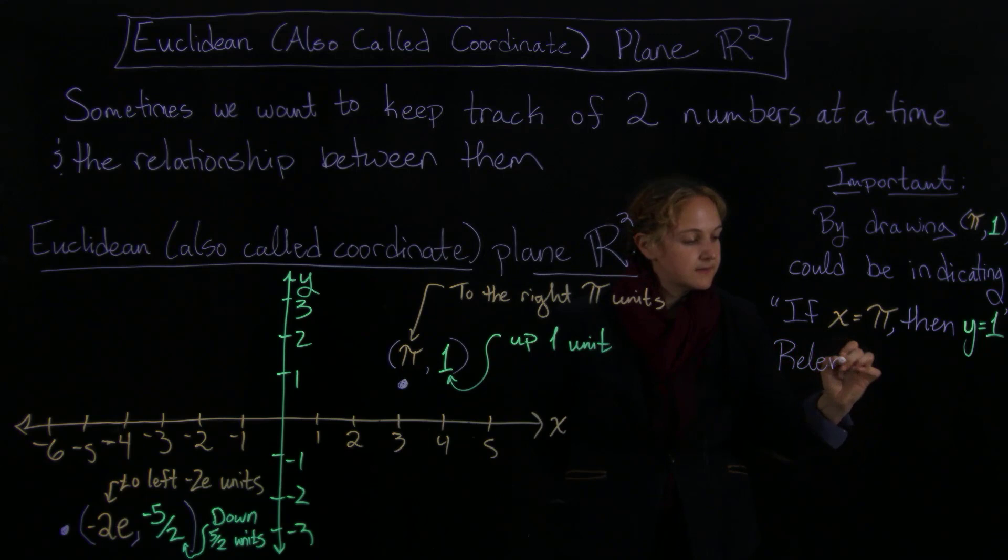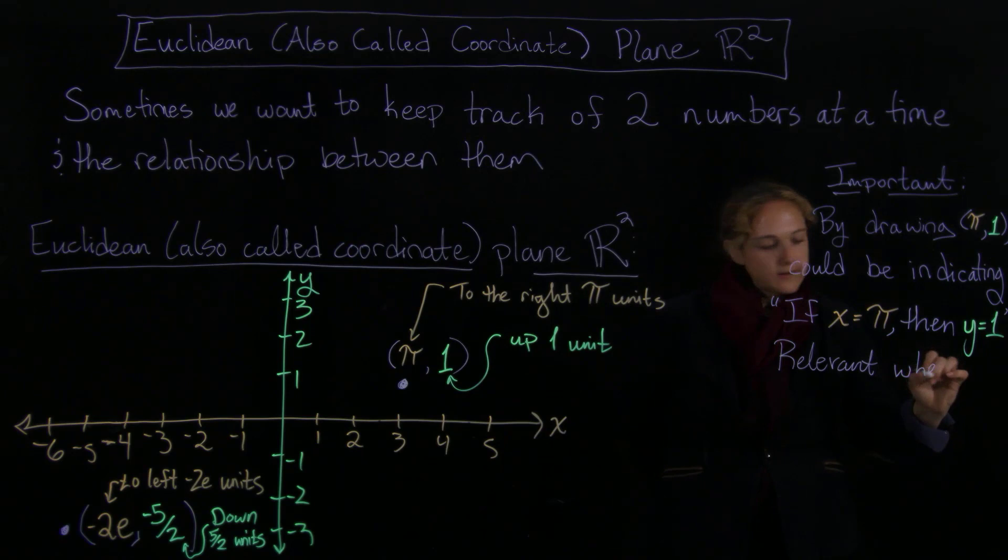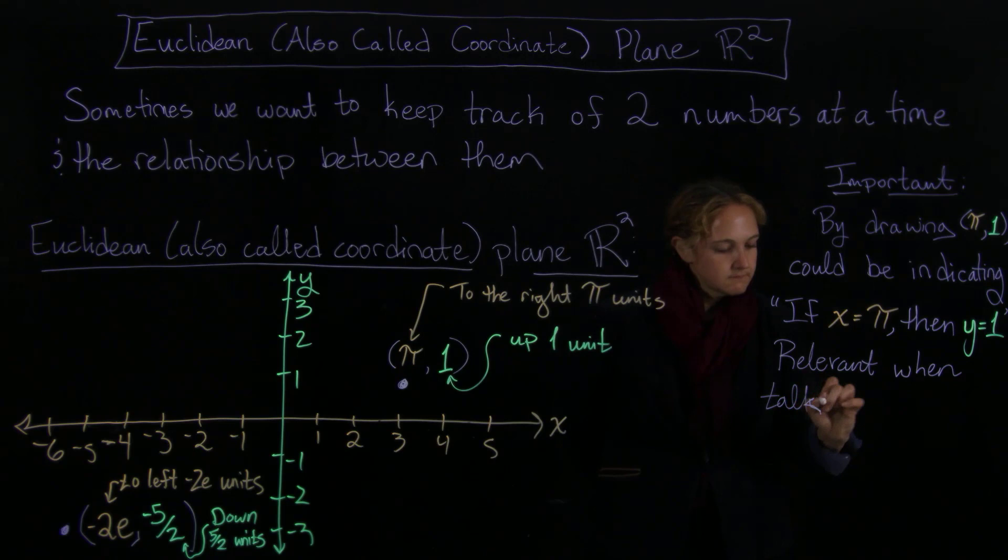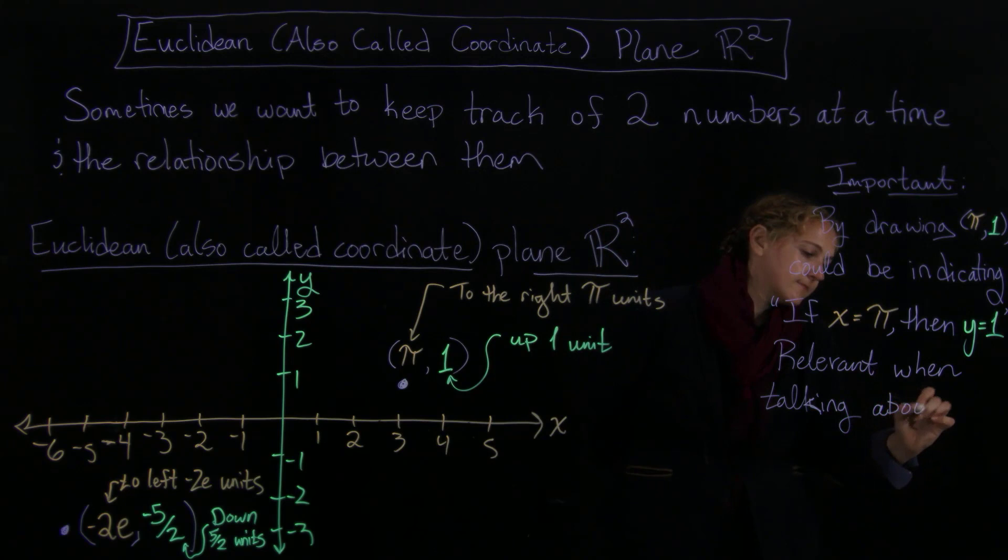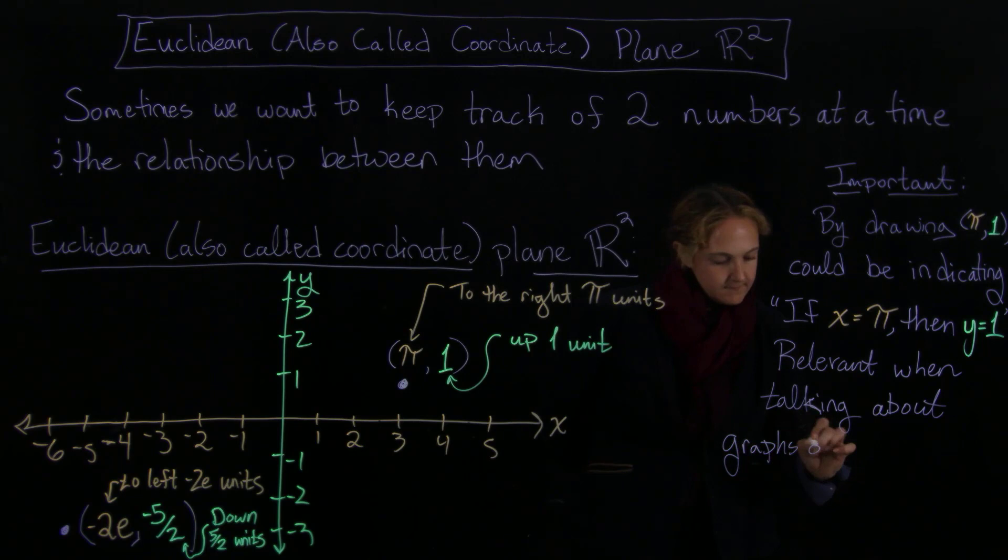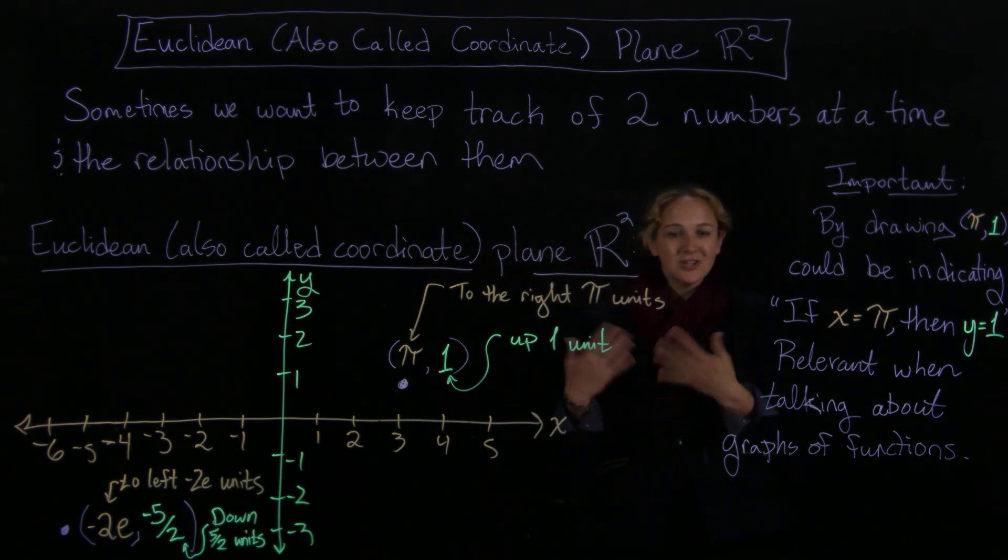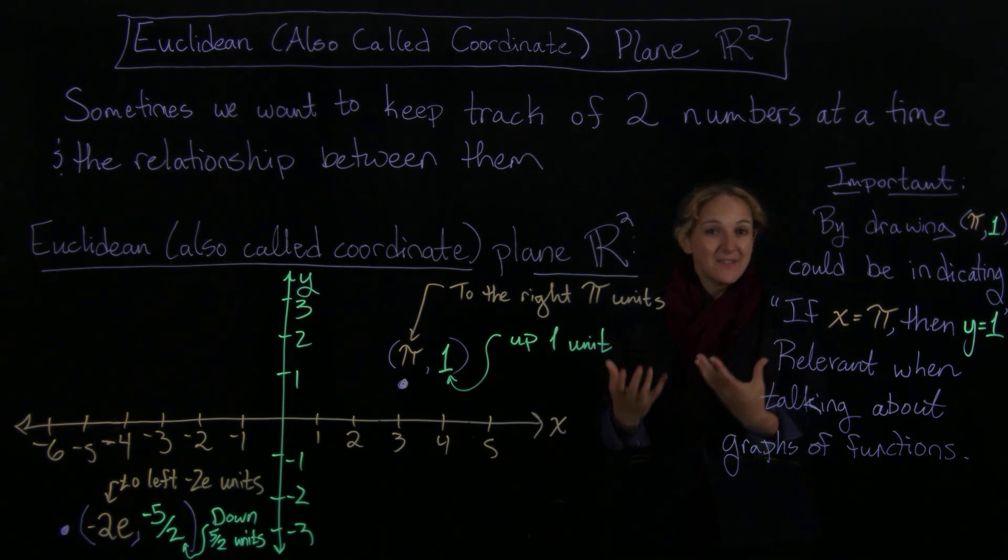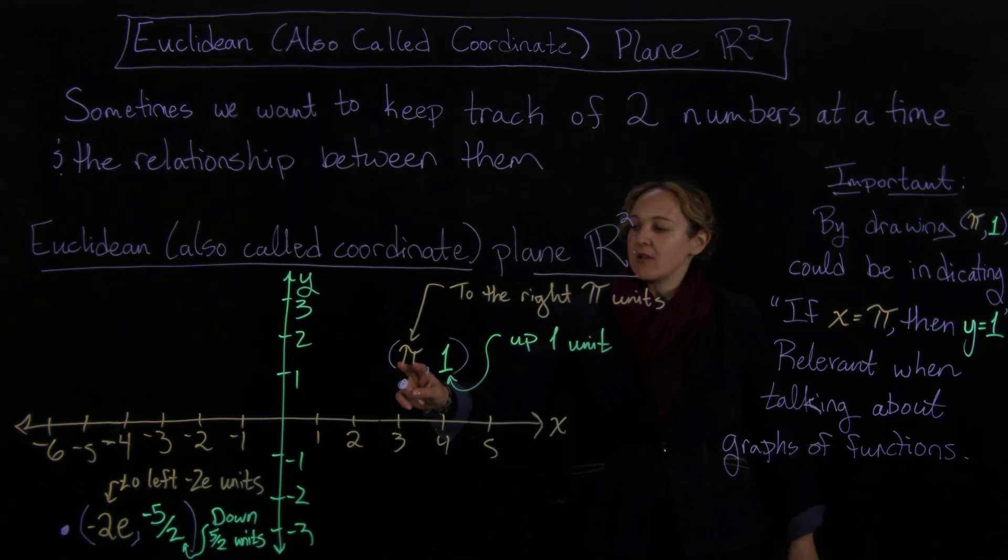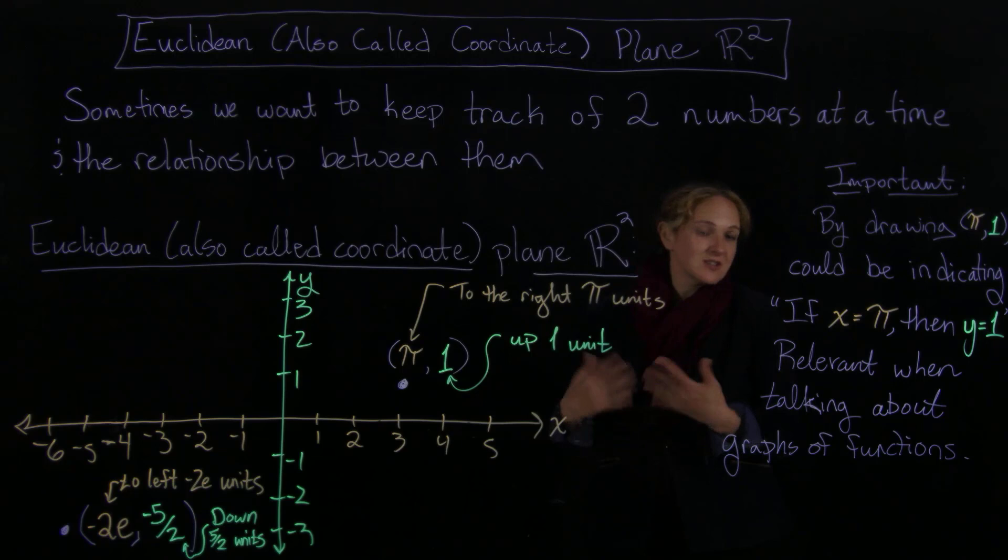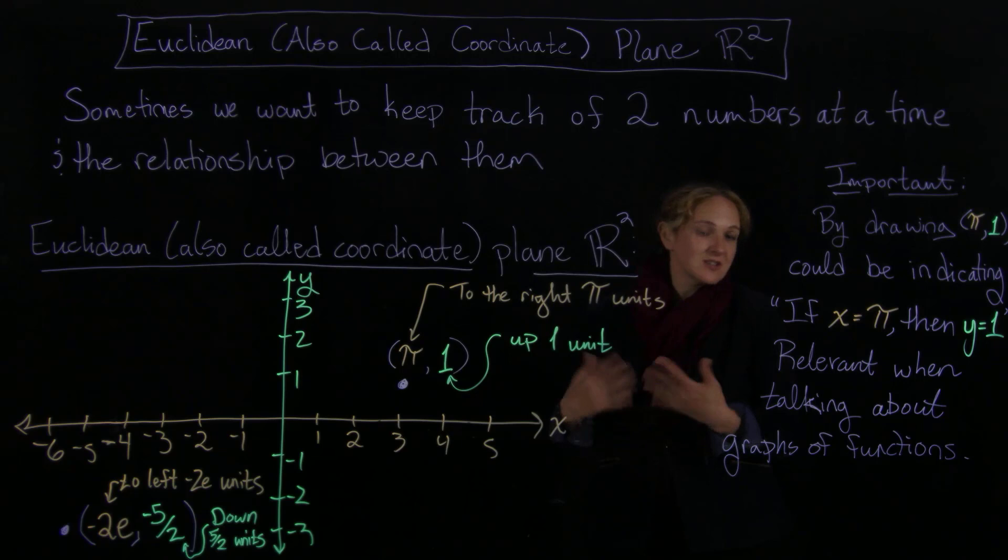And this is going to be important and relevant, an underlying idea when we're talking about graphs of functions. So this is the coordinate plane, and actually really kind of embedded in the order is a relationship. Like an if-then relationship, almost, as in, or an input-output relationship, so if my input is pi, then my output is one. So that can show up in functions, it can show up in other kinds of settings, and so it's another important way that we use the coordinate plane.